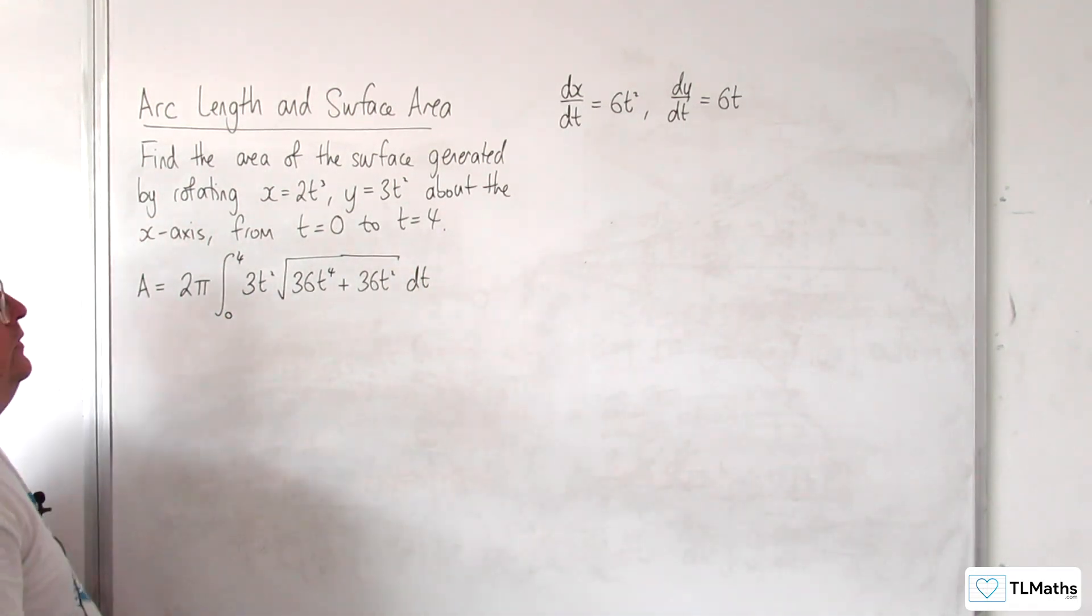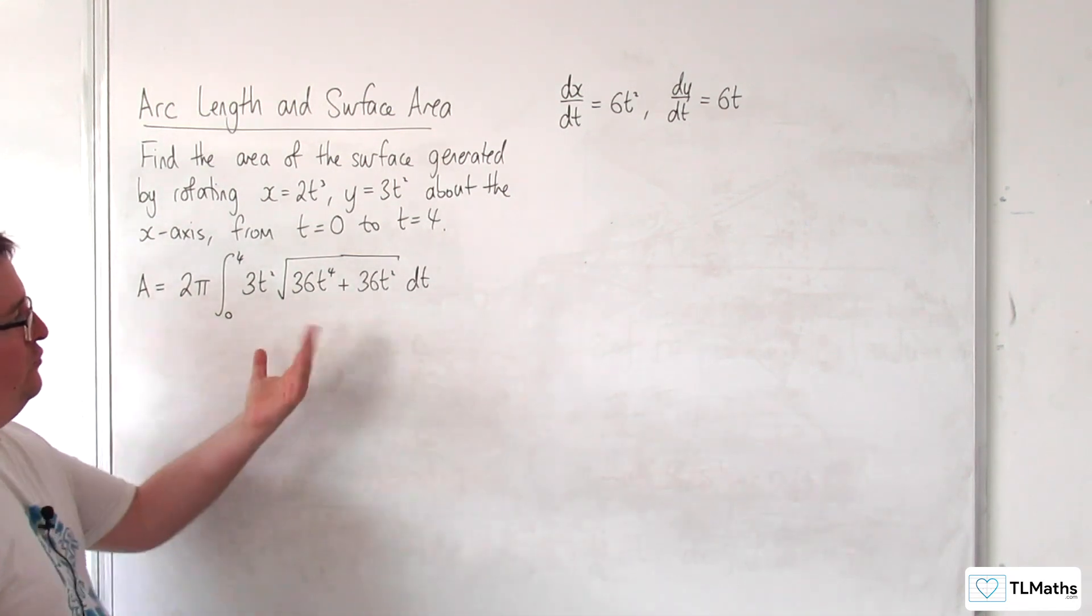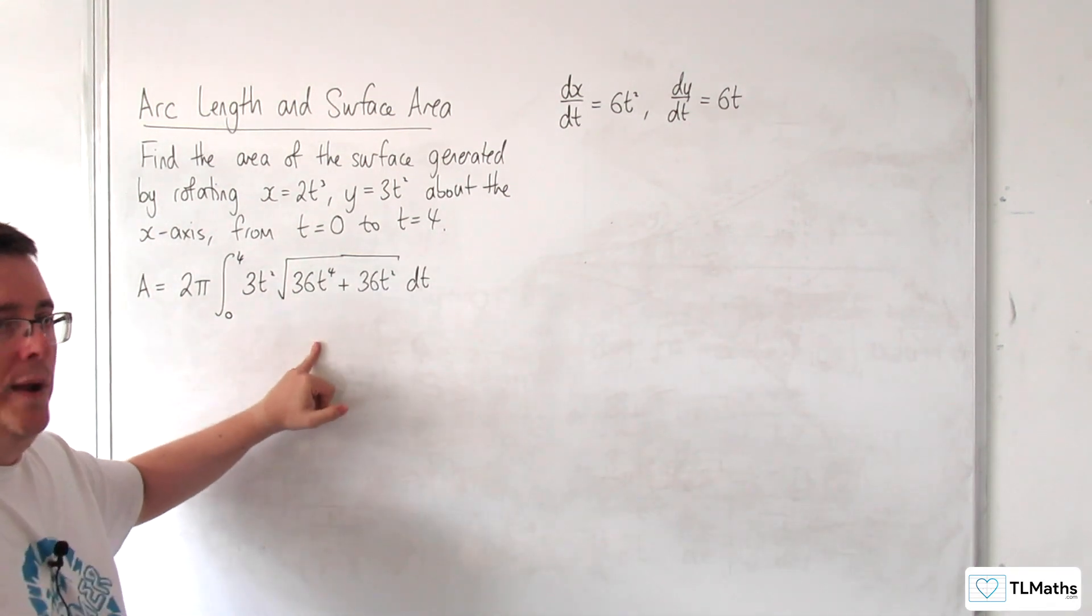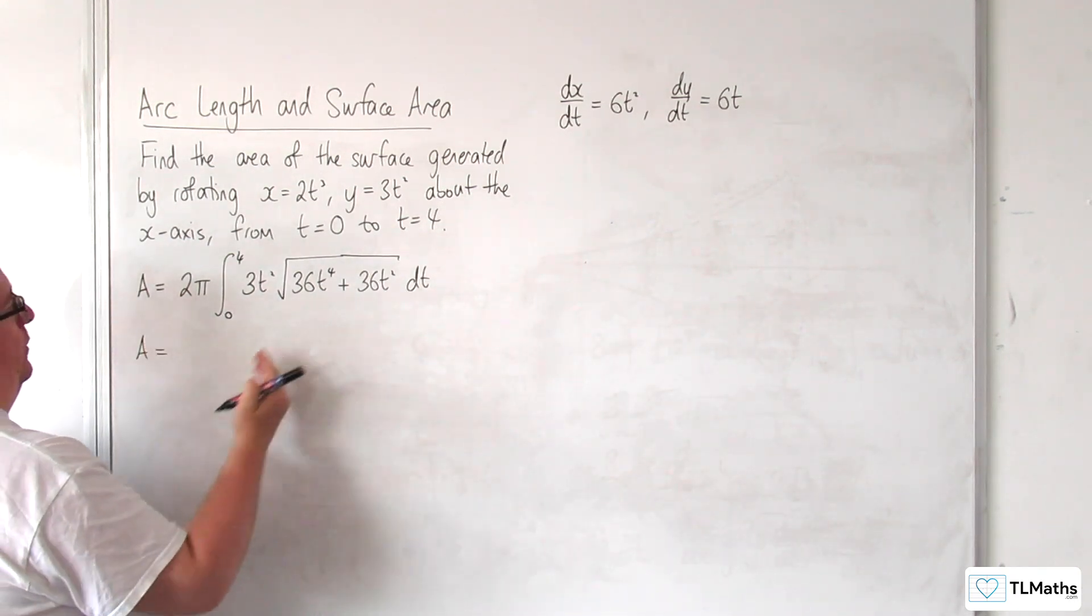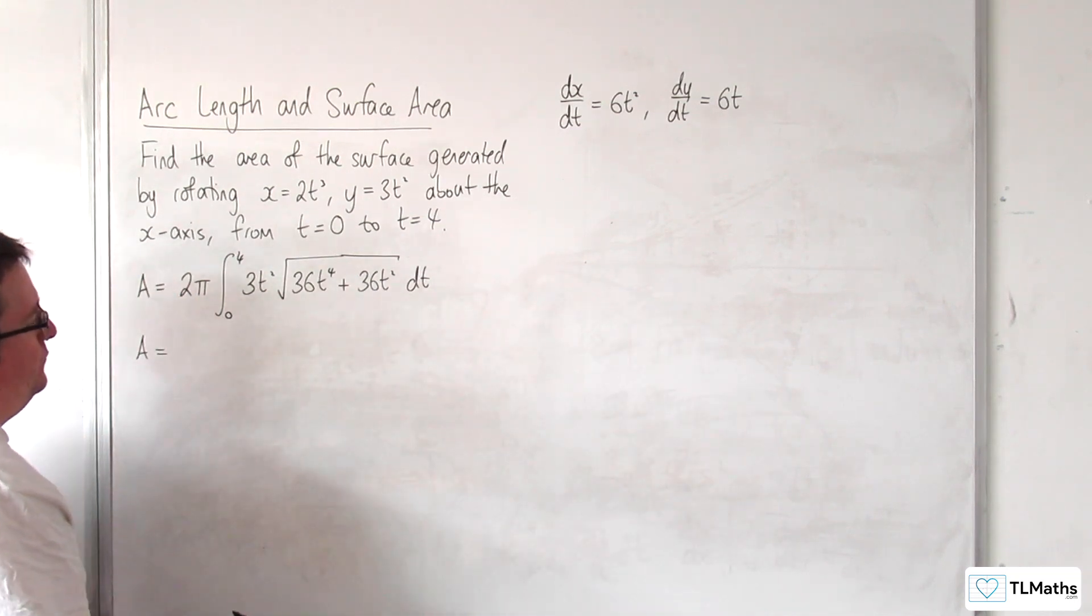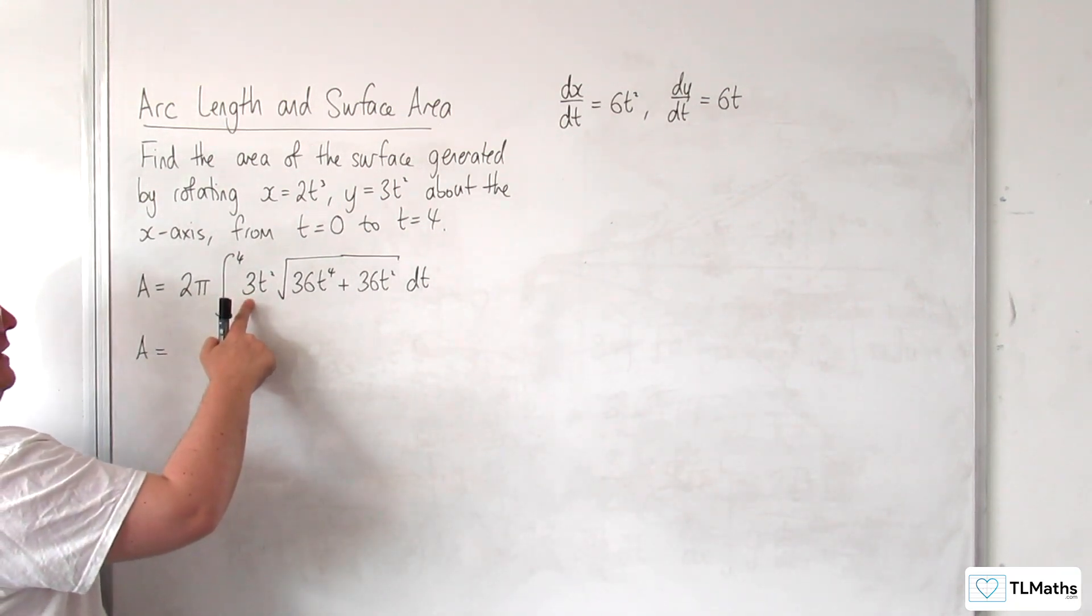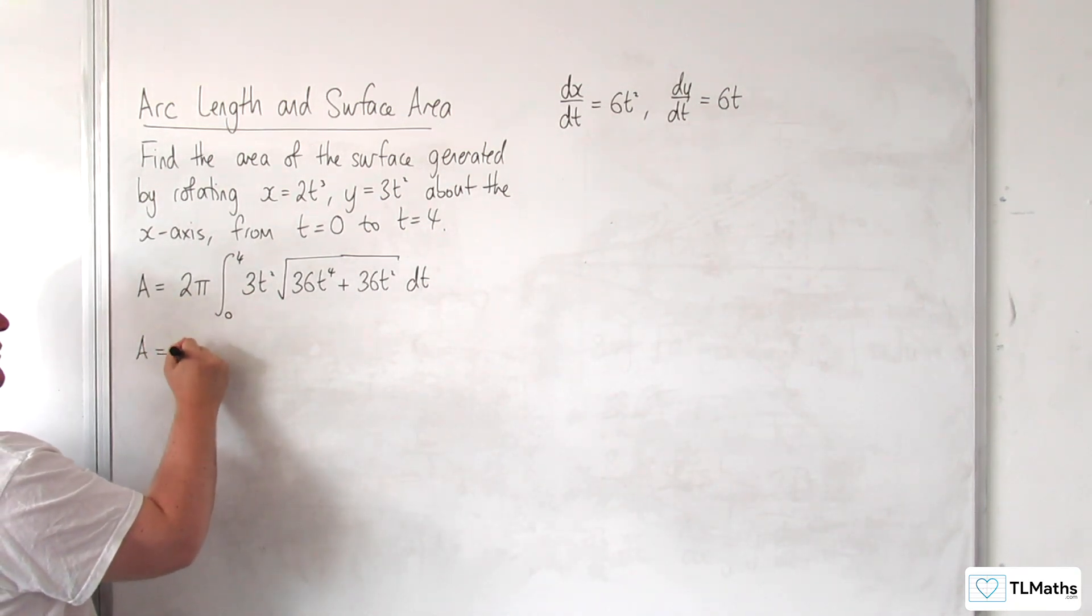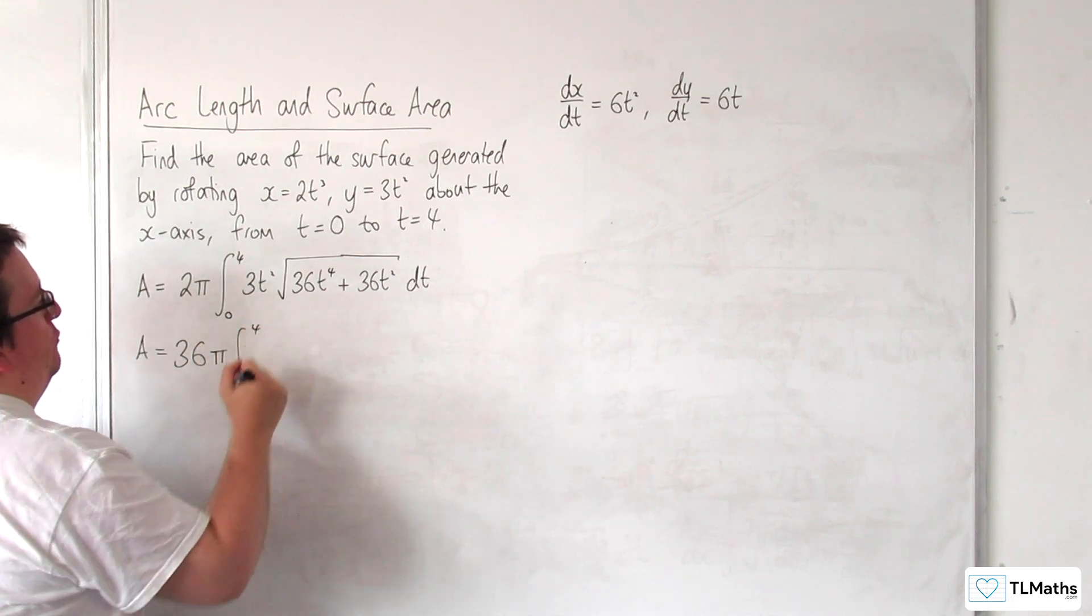Okay, so first thing from here, recognize we've got 36 as a square number, we can factor out the 36, we can factor out the t squared as well. So I'm going to get A is equal to, so I'm factoring out the 36, which gives me 6. So the square root of 36 is 6, times by the 3 is 18, times by the 2 is 36, so I've got 36π on the outside now, between 0 and 4.